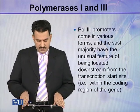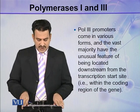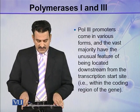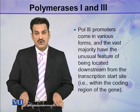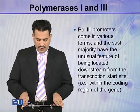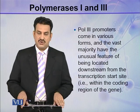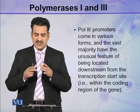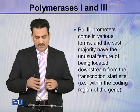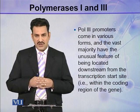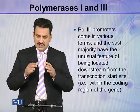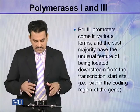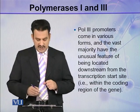Polymerase 3 promoters come in various forms, and the vast majority have the unusual feature of being located downstream from the transcription start site. So unlike most promoters which are present upstream, the promoters for polymerase 3 are present downstream from the start site of transcription, coming within the coding region of the gene.